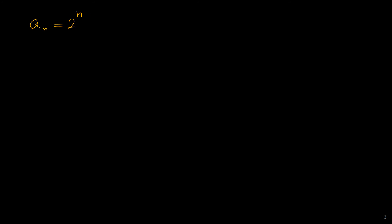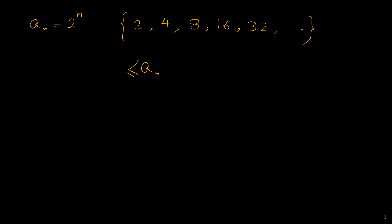Now consider this example: A sub n is given by 2 to the n. The first term is 2, the second term is 2 squared which is 4, the third term is 2 cubed which is 8, the fourth term is 2 to the 4 which is 16, the fifth term is 2 to the 5 which is 32, and so on. As you can see, this sequence is bounded from below because all the terms are greater than 2.